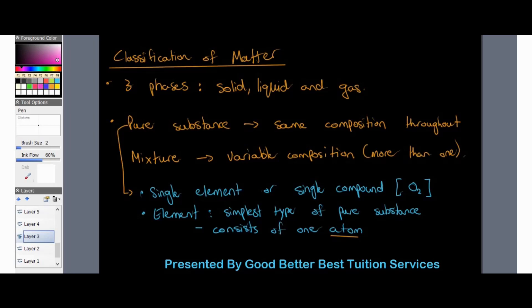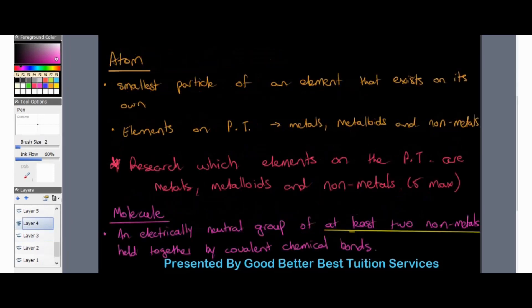A mixture has variable composition, meaning there is more than one substance within it. An atom is the smallest particle of an element that exists on its own. Everything consists of atoms, and billions of atoms exist in our world. We find elements on the periodic table, and they are divided into three main categories: metals, metalloids, and non-metals.